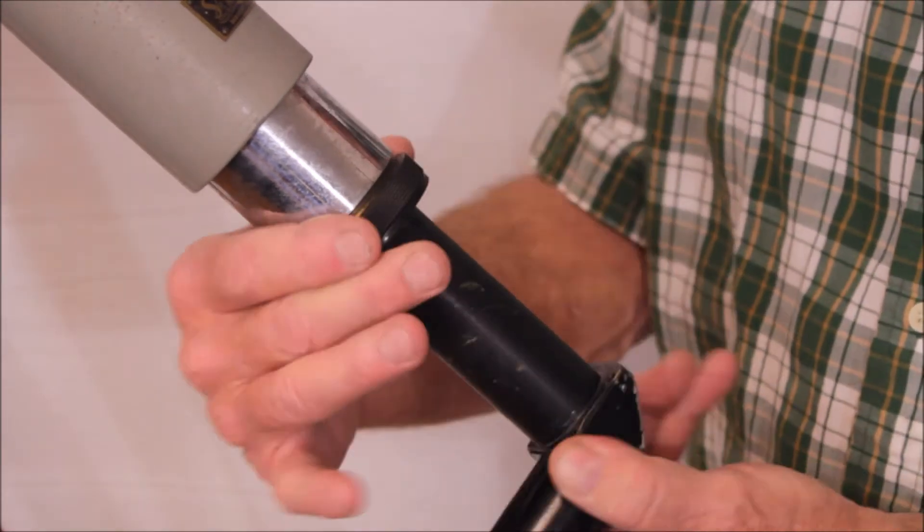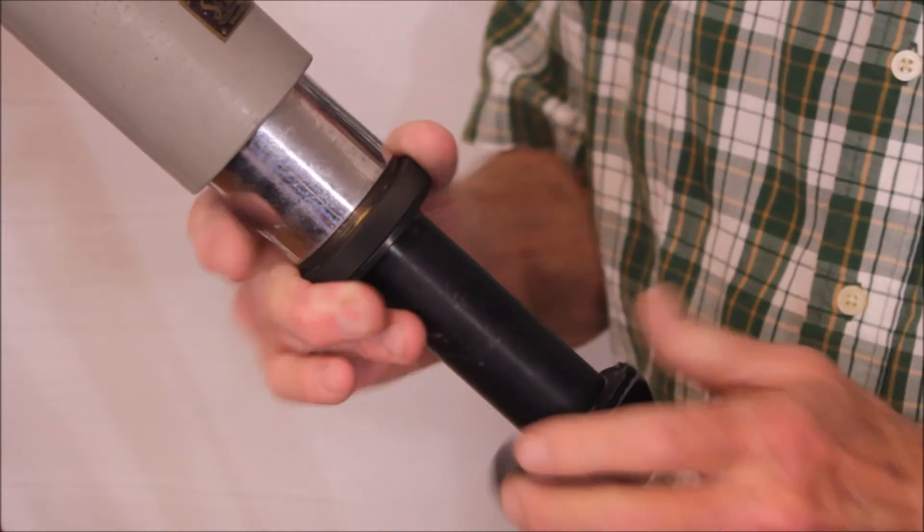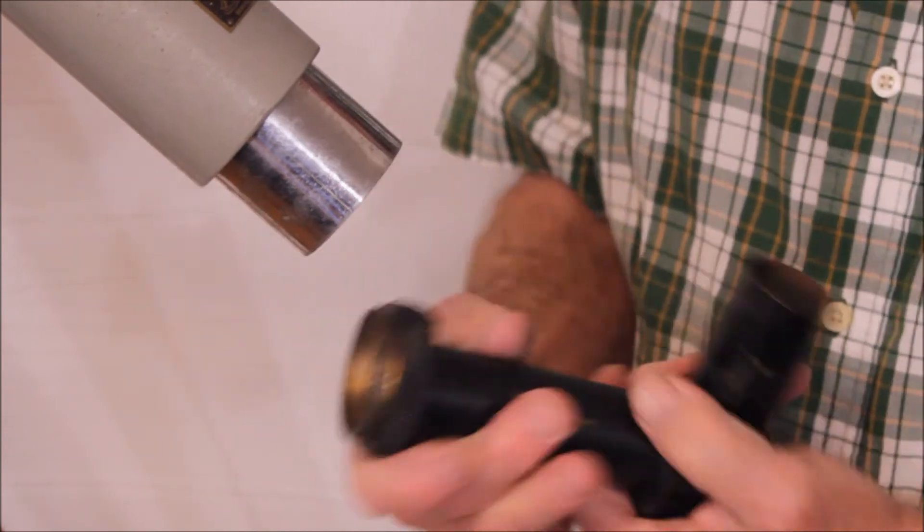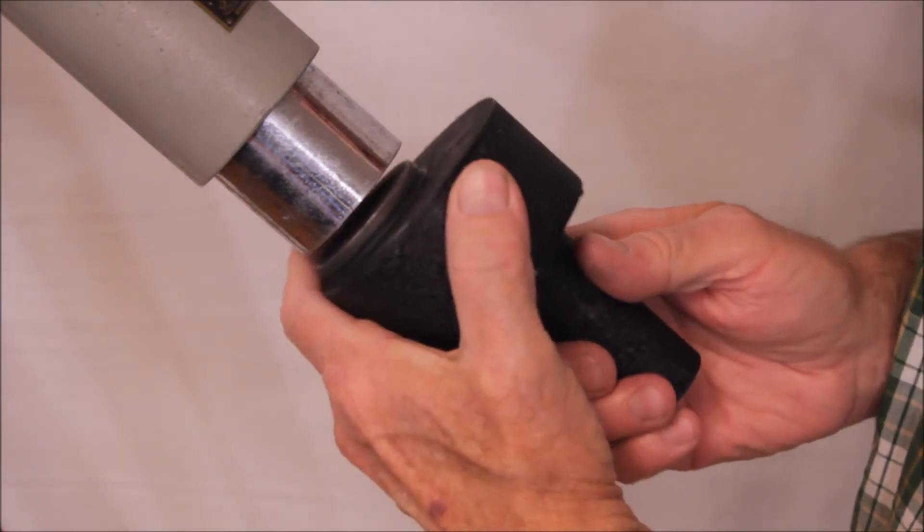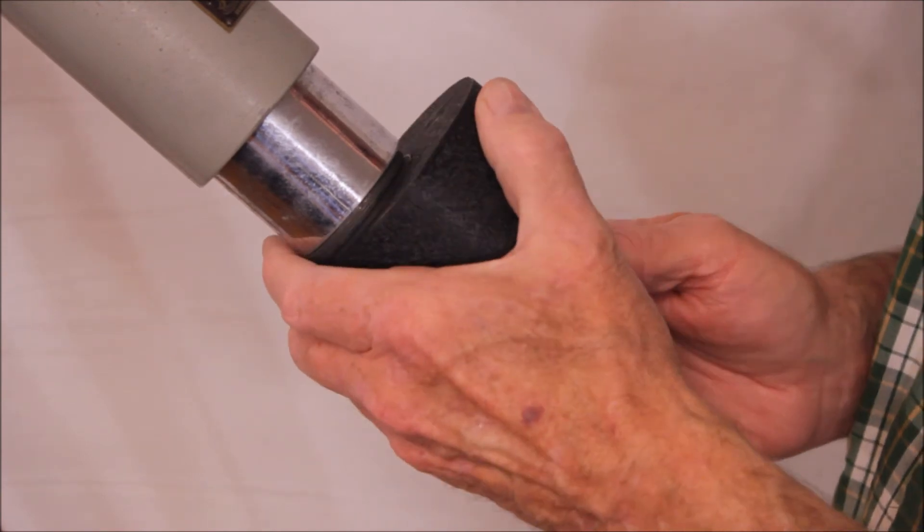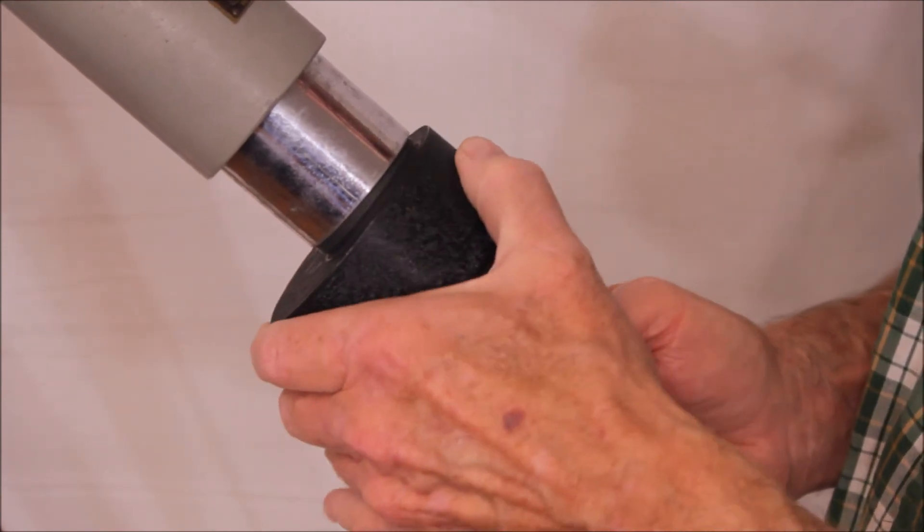Here's the star diagonal. The star diagonal screws in. It's pretty much a permanent kind of deal. I'm sure this is all original. Here's the poro prism. The poro prism is also a screw in. It's tricky to do this.